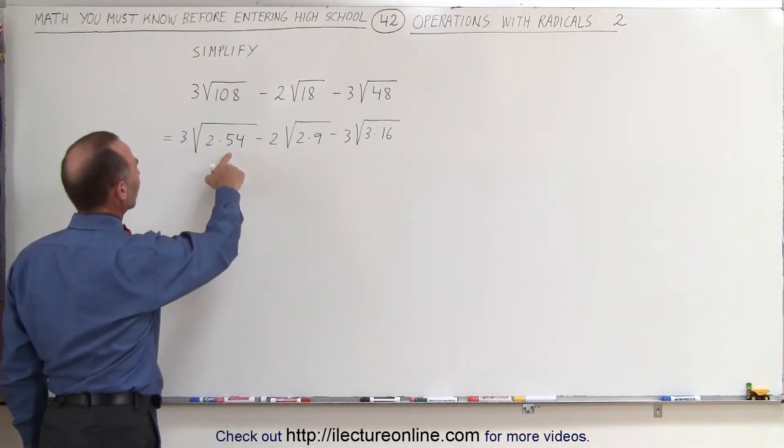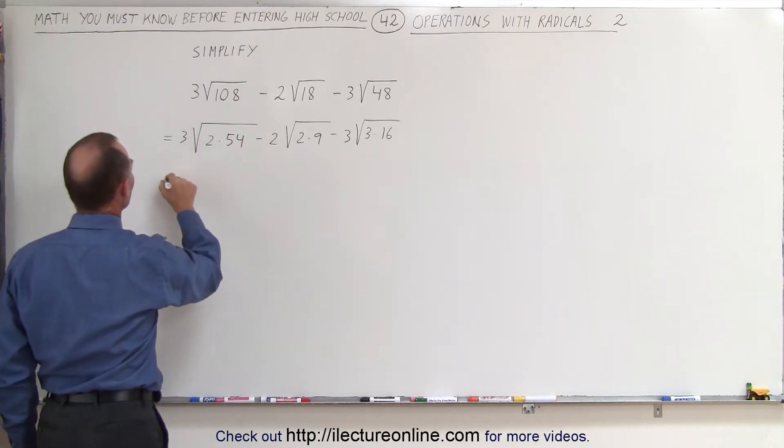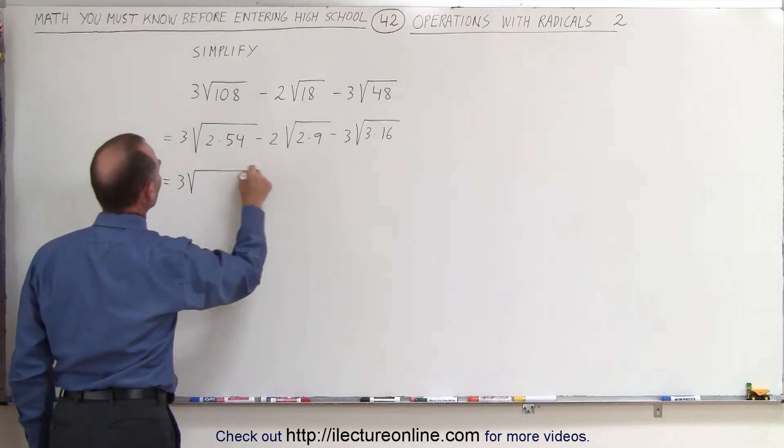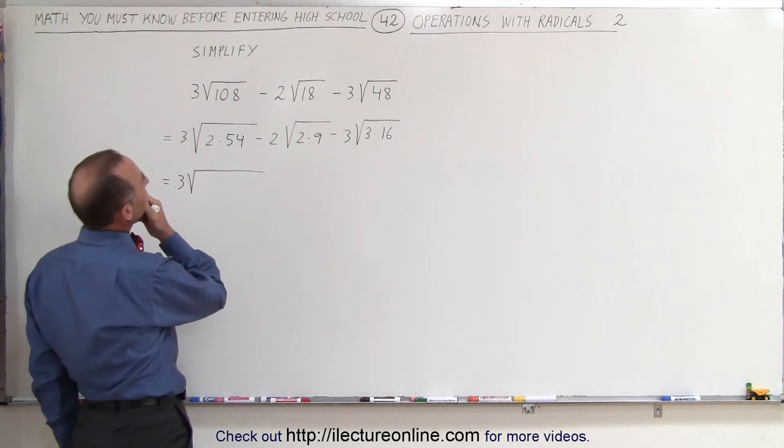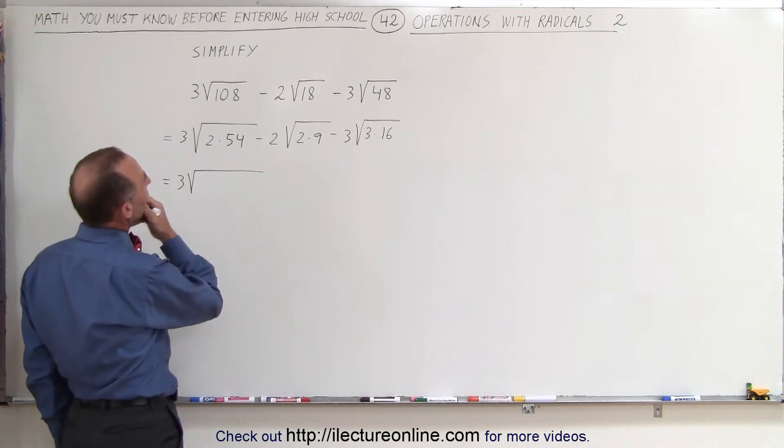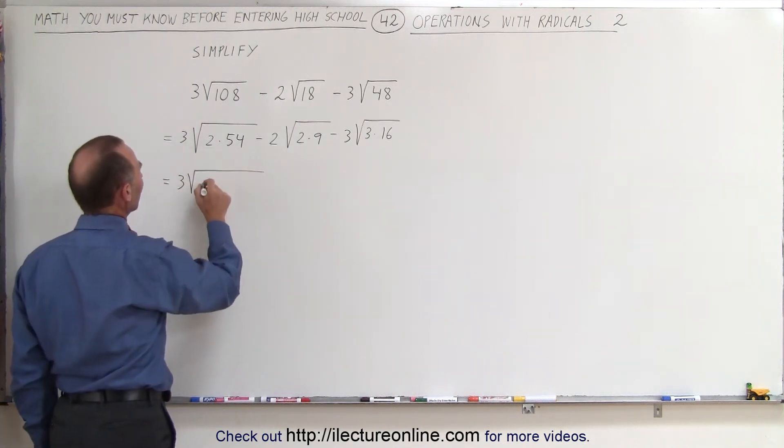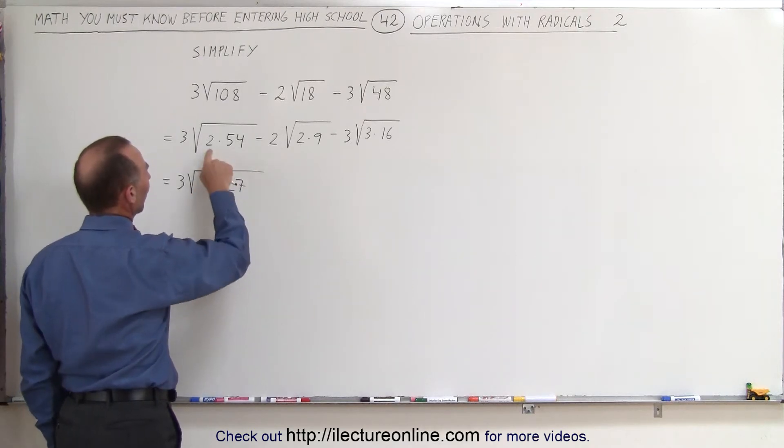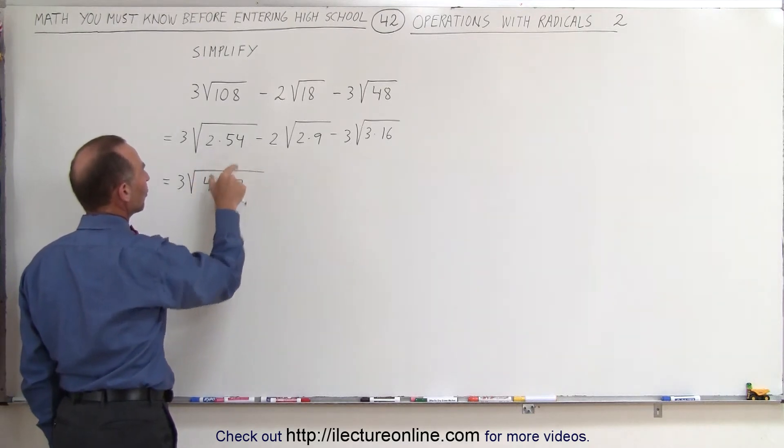Next, what we can do is here, this can be written as follows: 3 times the square root of, let's see, 227. Okay, I can have 2 times 2. This can be written as 2 times 2 or 4 times 27. So I multiply this times 2, divide this by 2, we get this.